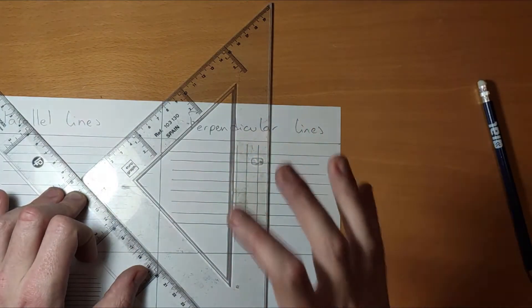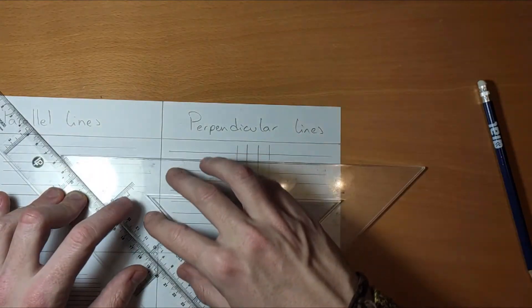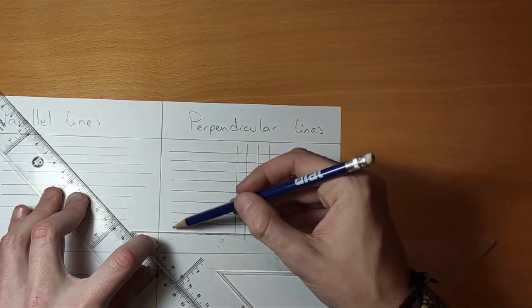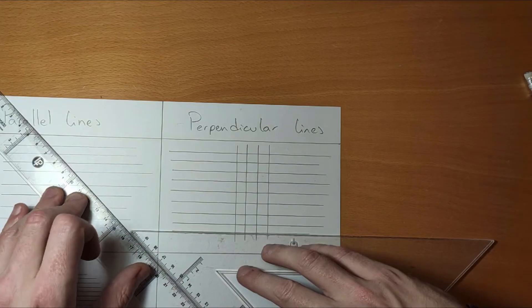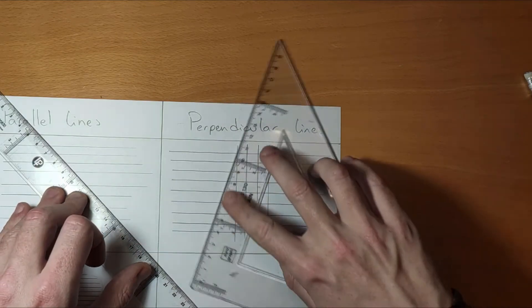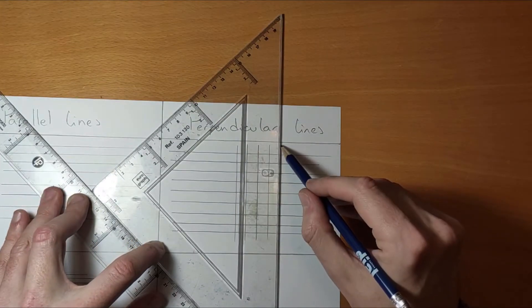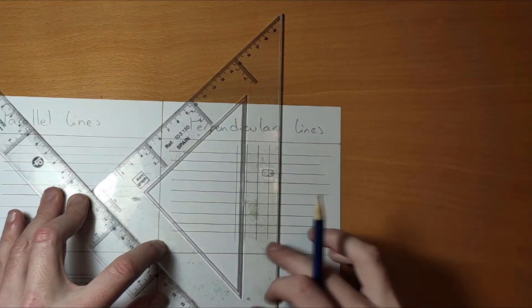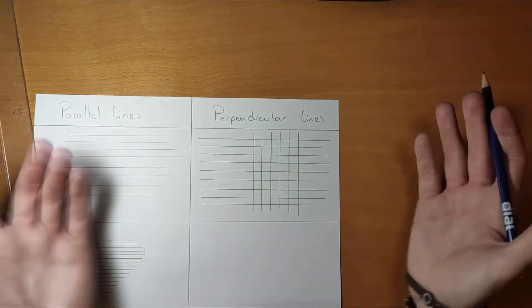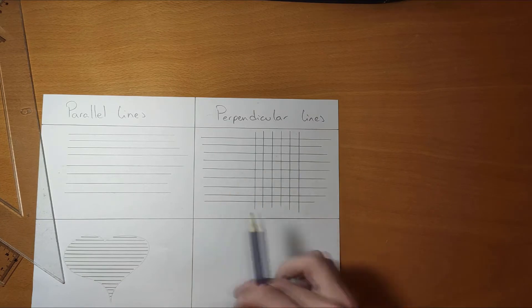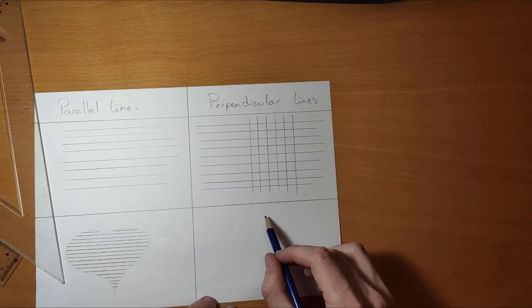I'm going to repeat the movement one more time. Okay, here to trace these horizontal lines, and for the vertical ones which are perpendicular, I use this side as well.